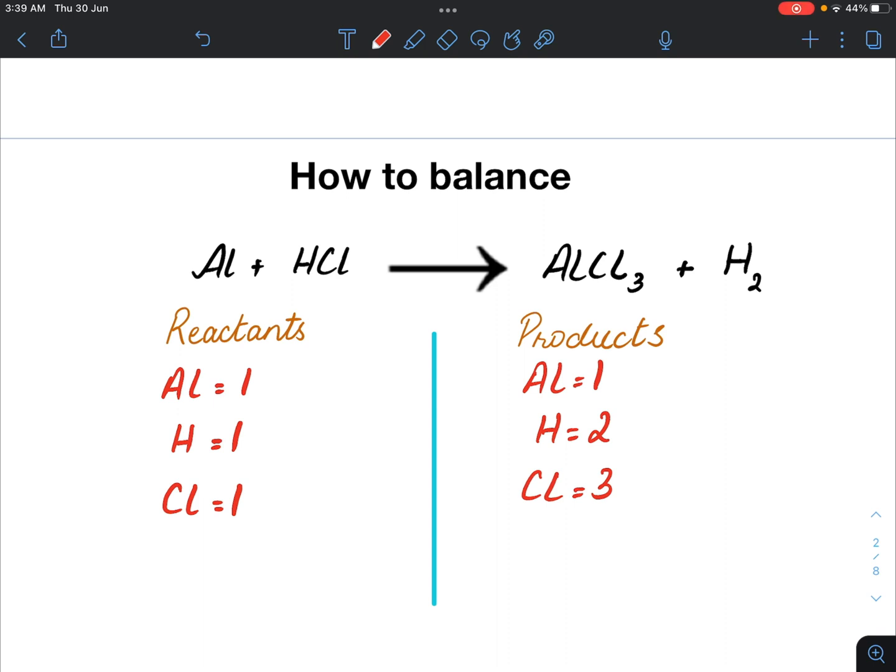If I try to balance the hydrogen at the reactant site by multiplying it with two, I will completely unbalance the chlorines on both sides.